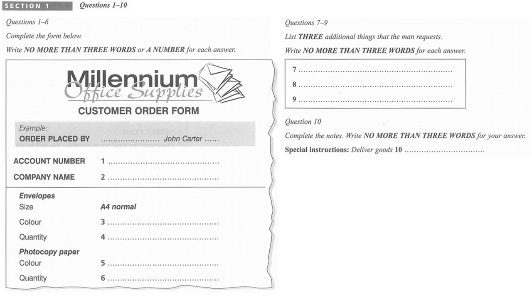You will see that there is an example which has been done for you. On this occasion only, the conversation relating to this will be played twice. Thank you for calling Millennium Office Supplies. If you would like to place an order, please press 1. Your call has been placed in a queue. A customer service operator will be with you shortly.